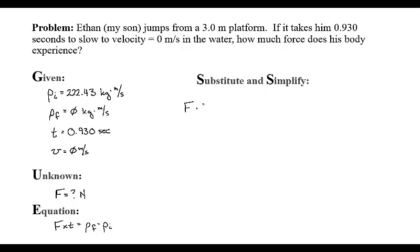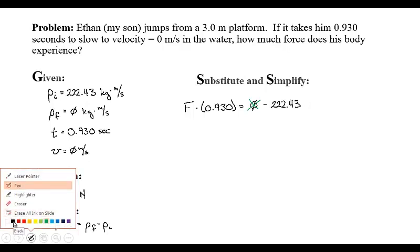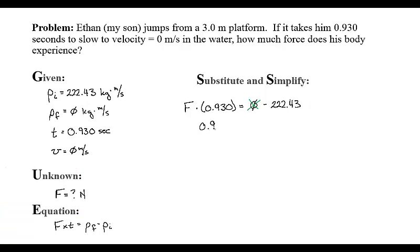So I'm going to say that force times time equals momentum final minus momentum initial. Now, I don't know what force is, but I do know that time is 0.930 seconds. And that equals my final momentum is 0 minus 222.43. Now, I know that this just kind of blows up adding 0 to anything is kind of, it doesn't help you that much. And so, I'm going to have 0.930 times force equals negative 222.43. I'll divide the left by 0.930 so that these cancel, cancel. And whatever I do to the left, I have to do to the right, leaving me with a force of 239.17 newtons.